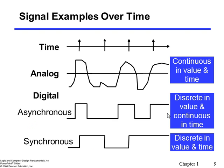Analog values are continuous in both value and time — an analog signal shows no abrupt changes. In a digital system, we have only two discrete values. Asynchronous digital systems have discrete values but changes are independent of any timing clock, meaning they are continuous in time. Synchronous systems are also discrete in value, but changes are allowed only according to a clock with a certain timing.